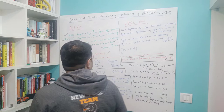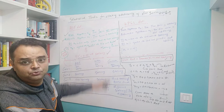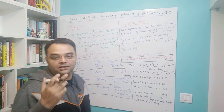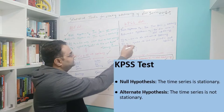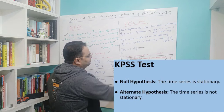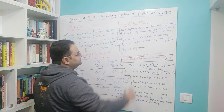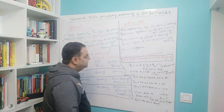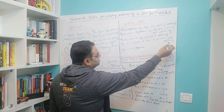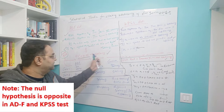The KPSS test is the opposite. In KPSS the null hypothesis H0 is that the time series is stationary — just the opposite of ADF. If H0 is true, meaning the time series is stationary, there is no unit root. If H0 is rejected then H1 is true, meaning the time series is not stationary. So if you know one test, the other is just the opposite.